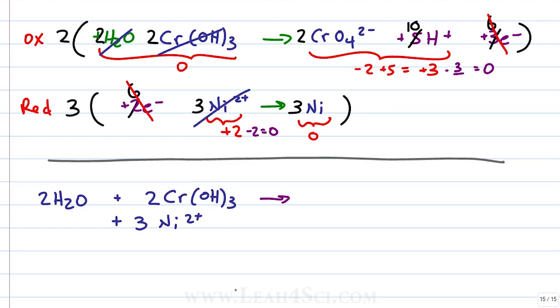That's everything for the reactants. What do we have on the products? 2 chromate ions, 10H+ and 3 nickel solid.